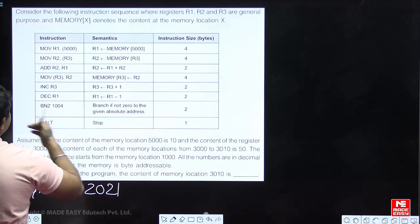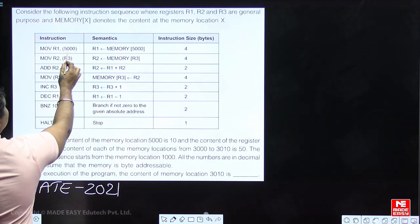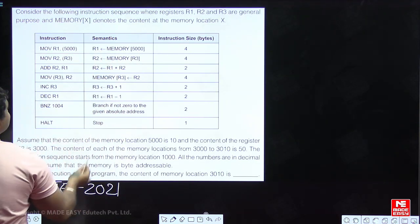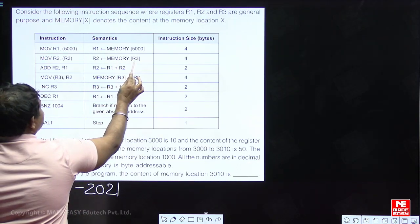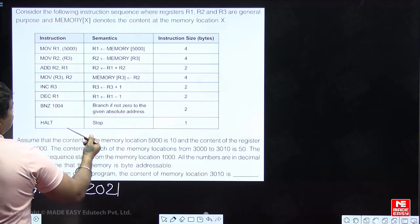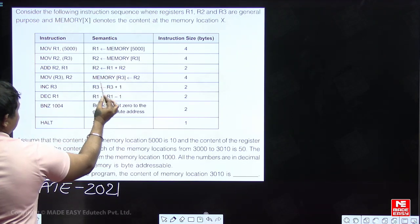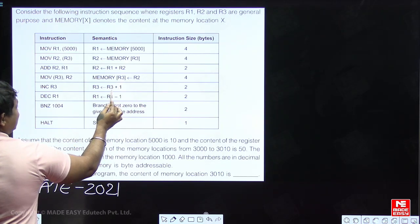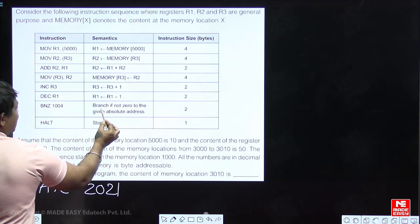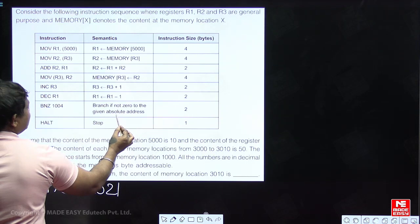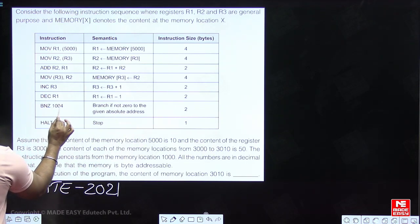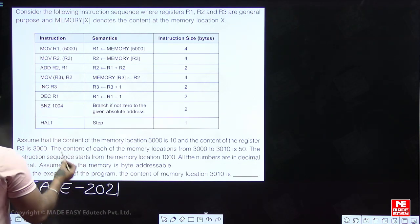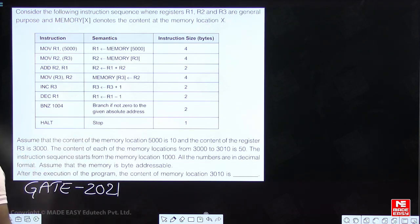The program is: MOV R1, [5000] — transfer content of memory location 5000 to R1. Next, transfer memory content whose address is in R3 to R2. Next, R2 = R1 + R2, then store R2 into memory whose address is in R3. Then increment R3, decrement R1, branch if non-zero to absolute address 1004. Finally, HALT — stop the process.